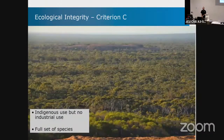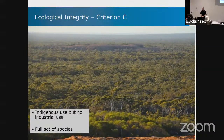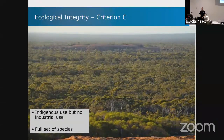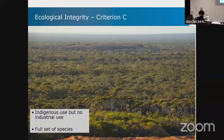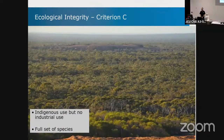Ecological integrity sounds like a big word, but think of it as untouched wilderness. It's a tricky one — none have been declared yet because the standard is pretty strict. But Australia is probably one of the areas where you should be able to find candidates for some of those really intact ecological systems. They're defined as areas with no industrial use, no roads cutting through, and ideally the full set of species, with some variation depending on where you draw the historical timeline.